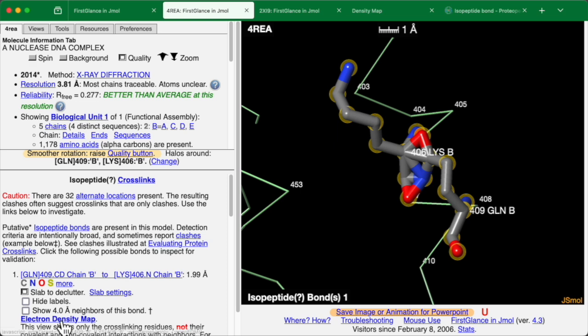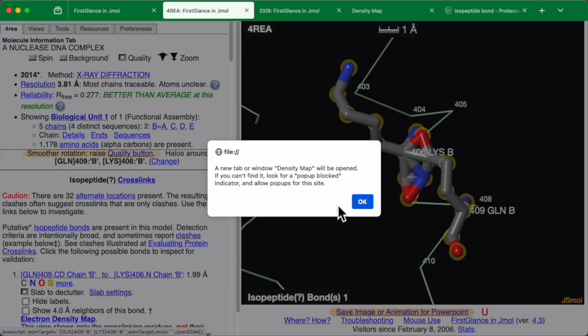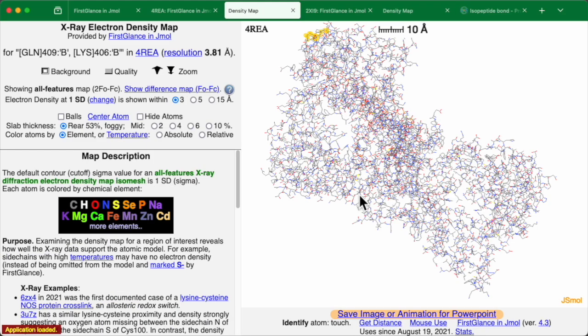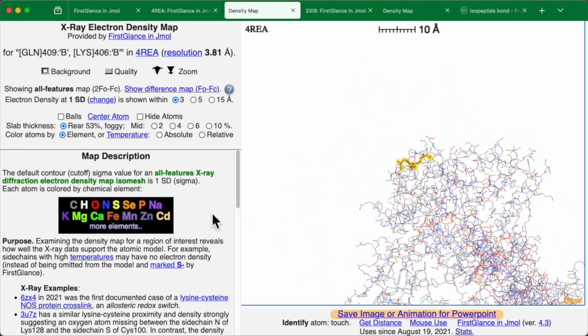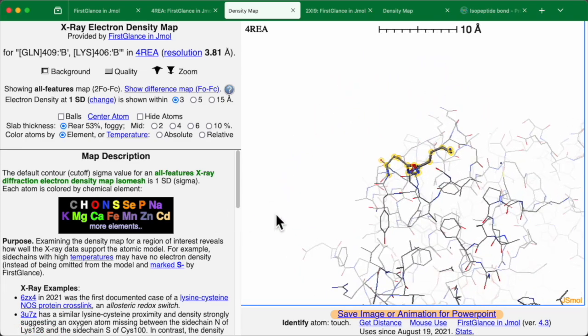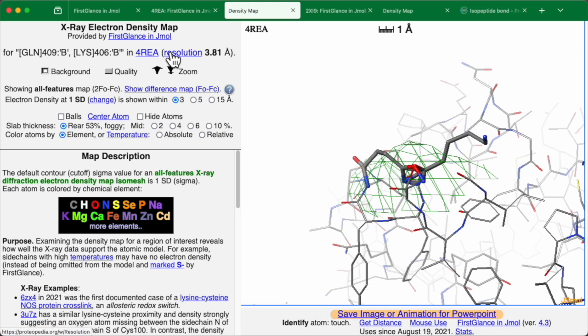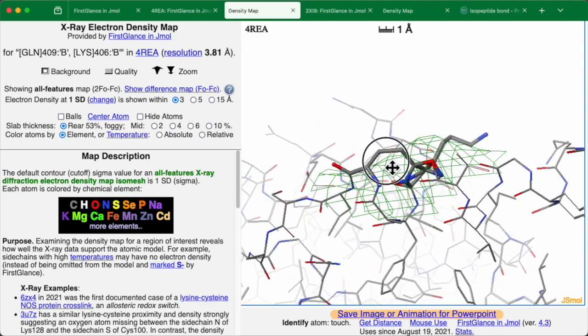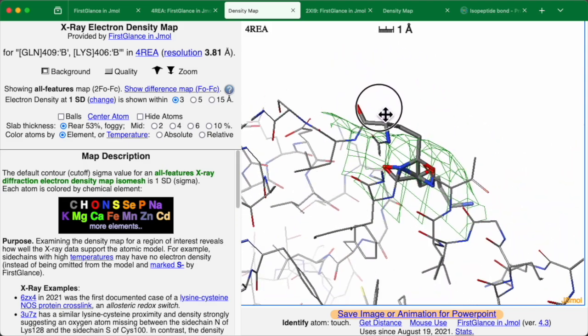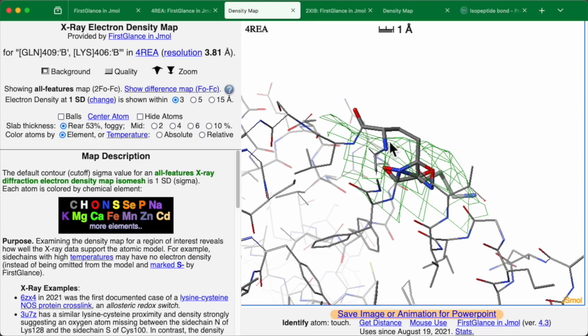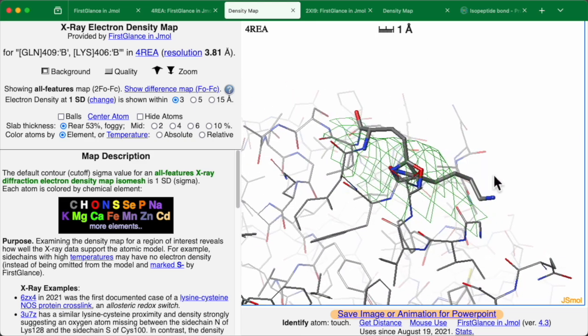Let's look at the electron density map. Notice the resolution here is far worse than our other example. Here it's 3.8 angstroms, which is far worse than 1.9 angstroms. And we see that the map here doesn't fit the model well at all. We see parts of the model sticking outside the map here and here.